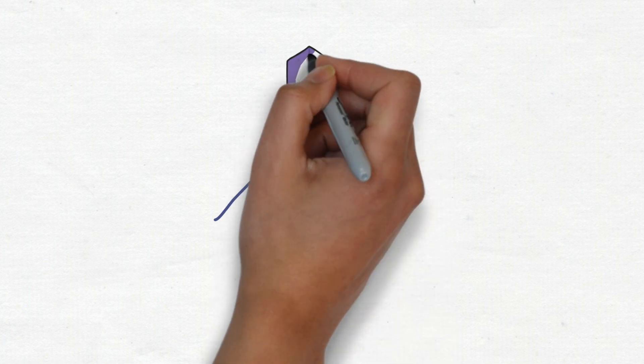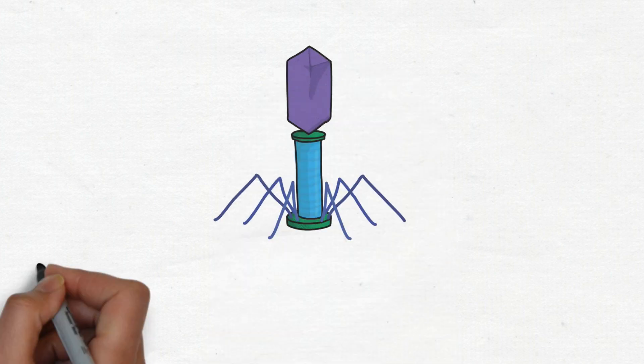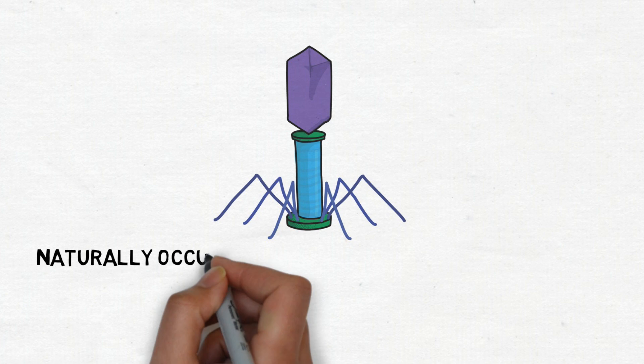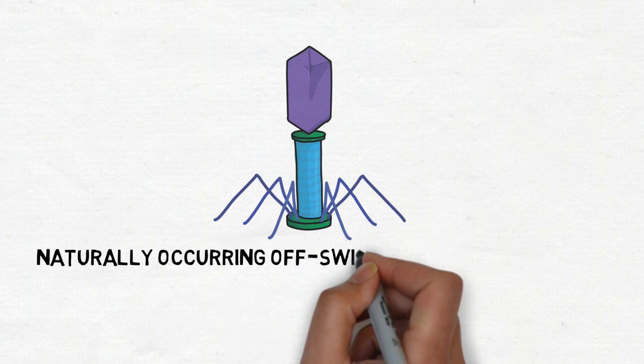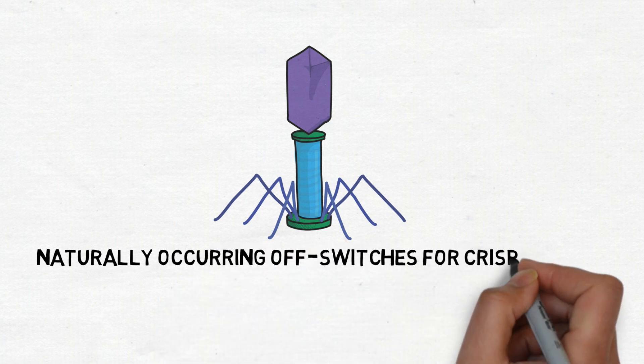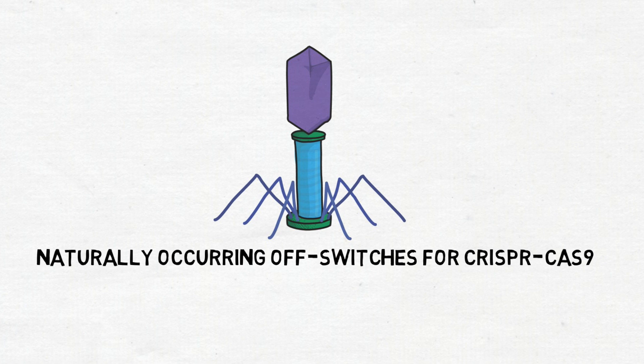How do viruses outwit bacteria in their struggle for survival? The answer provides new advances in the field of CRISPR-Cas9 gene editing and enables a fail-safe technology to treat or prevent human disease.